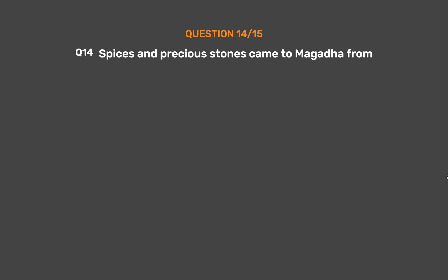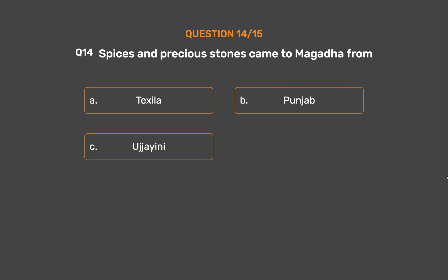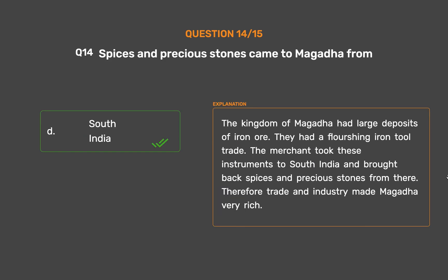Question No. 14. Spices and precious stones came to Magadha from? Option A: Deccan. Option B: Punjab. Option C: Ujjaini. Option D: South India. The correct answer is Option D: South India. The kingdom of Magadha had large deposits of iron ore and a flourishing iron tool trade. Merchants took these instruments to South India and brought back spices and precious stones from there. Therefore, trade and industry made Magadha very rich.